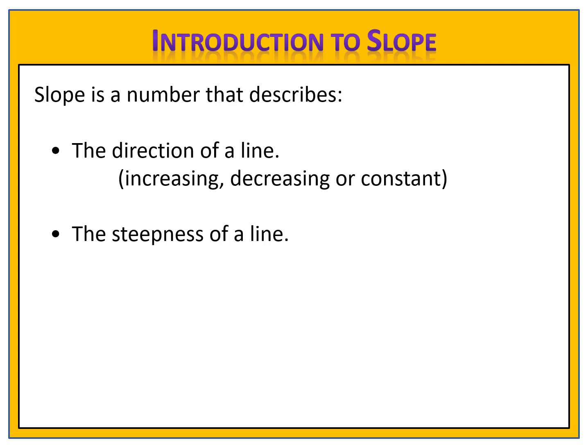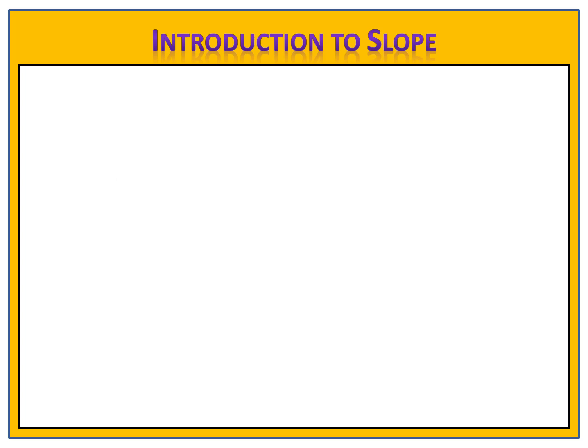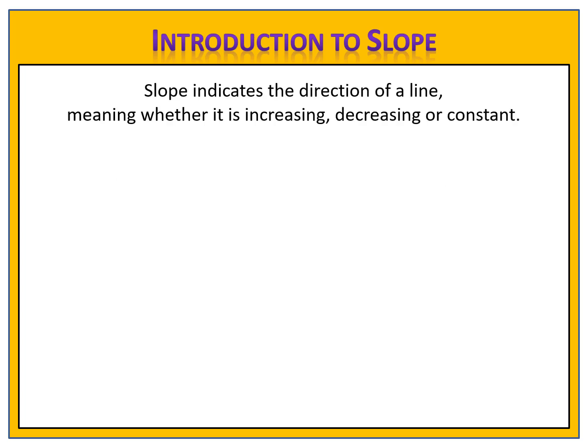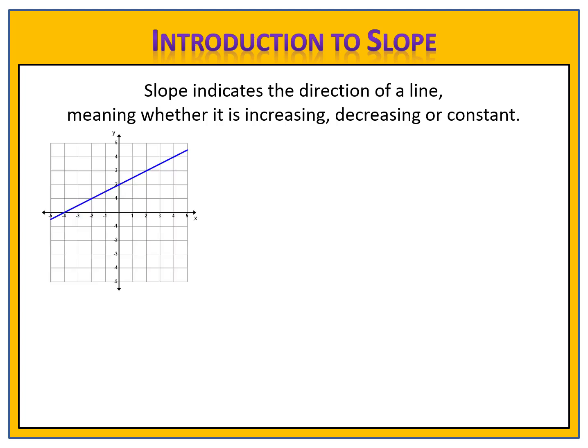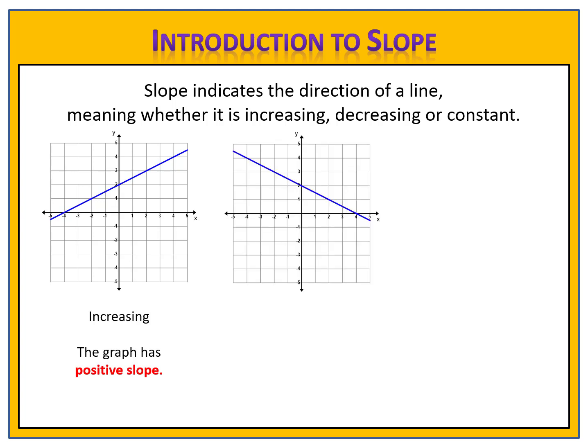Let's take a look at each of these items separately, starting with the direction of the line. Slope indicates the direction of a line, meaning whether the line is increasing, decreasing, or constant. Here we see a linear function whose graph is increasing — this graph has positive slope. So if you know that a linear function has positive slope, you know that the graph of the line must be increasing.